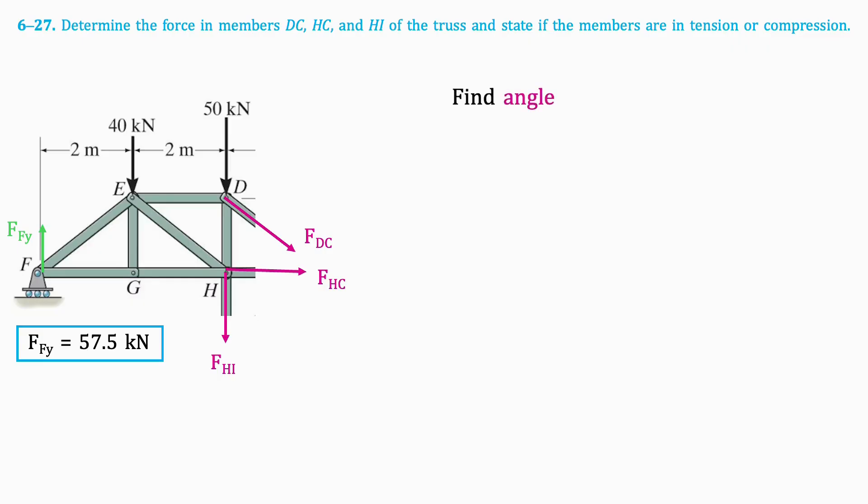Next, we'll find the angle formed by the truss. We'll do this by taking the inverse tangent of the side lengths of the truss. The result is an angle of 36.87 degrees. Now we have everything we need to solve the question.